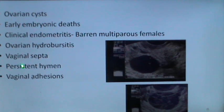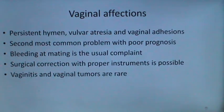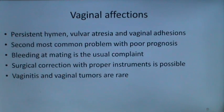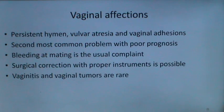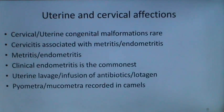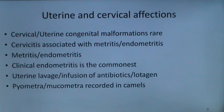Ovarian hydrosalpinx, vaginal septa, persistent hymen, and vaginal adhesions can be seen in camels. Persistent hymen, vulvar atresia, and vaginal adhesions are the second most common problem with poor prognosis. Bleeding at mating is the usual complaint and surgical correction with proper instruments is possible. Vaginitis and vaginal tumors are rare. Cervicitis associated with metritis and endometritis has been seen, and metritis and clinical endometritis are the commonest problems, treated by uterine lavage or infusion of antibiotics or Lugol's iodine.